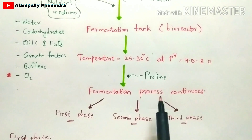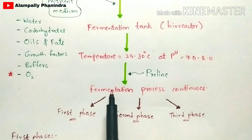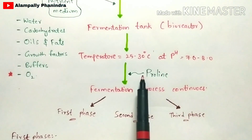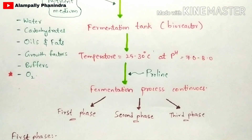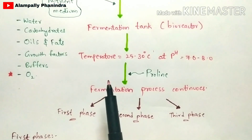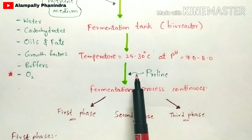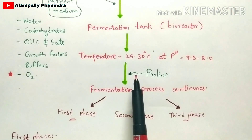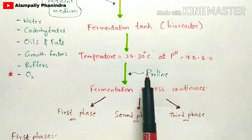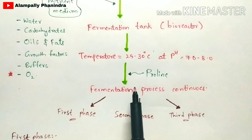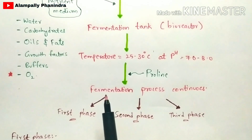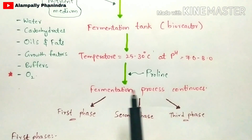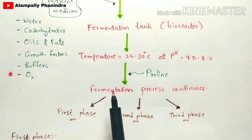During the fermentation process, proline is also added. Proline is added because it mainly helps in the production of a high yield of streptomycin. So for high yield production, proline is added during the fermentation process.